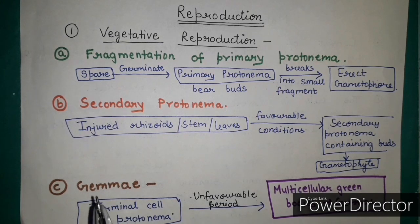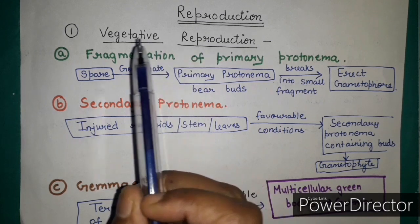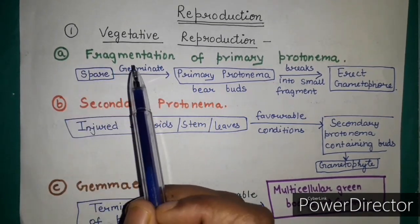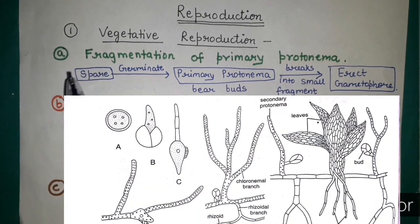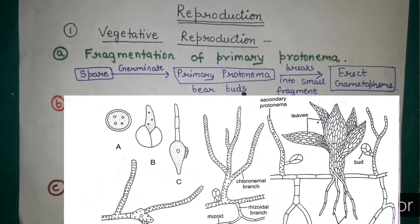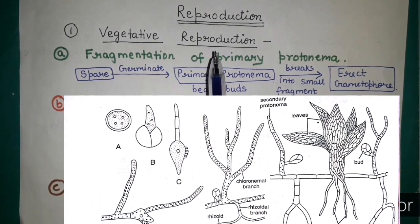Now we will discuss about reproduction in Funeria. Reproduction takes place by two methods: vegetative reproduction and sexual reproduction. Vegetative reproduction takes place by different methods. The first one is fragmentation of the primary protonema. Basically, the spore germinates and gives rise to a primary protonema, and the primary protonema bears buds. Whenever there is accidental fragmentation of the protonema, it breaks down into small fragments, and each fragment containing a bud will give rise to an erect gametophore.